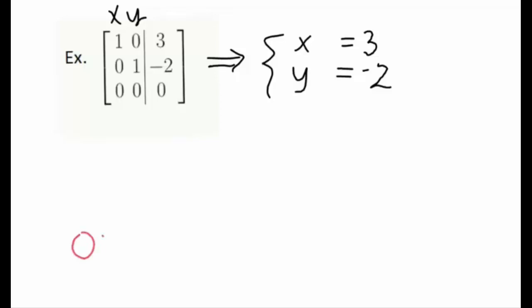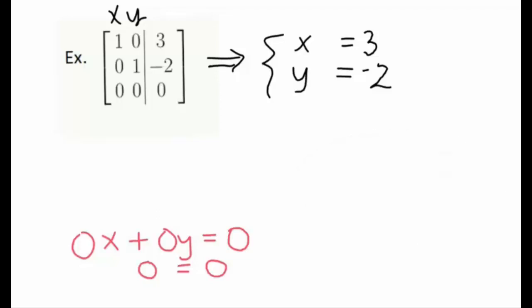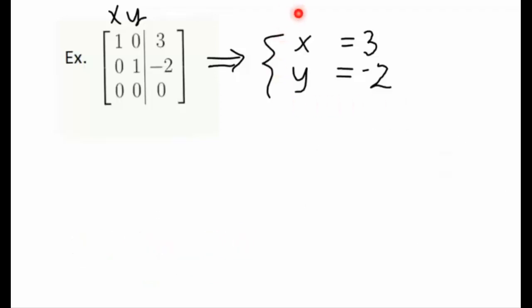Looking at that last statement: zero x plus zero y is just zero, so the last row really reads zero equals zero, which is a true mathematical statement. We ignore row three because it doesn't give us any false information. So we have x equals three and y equals negative two.